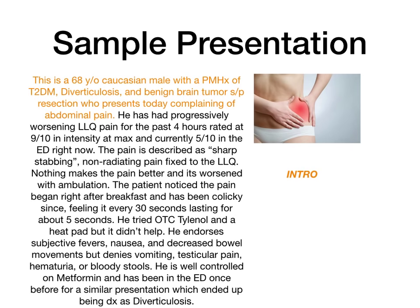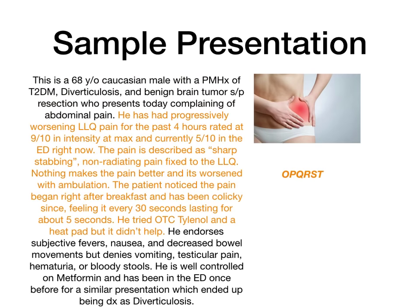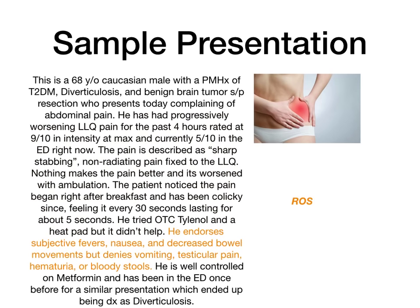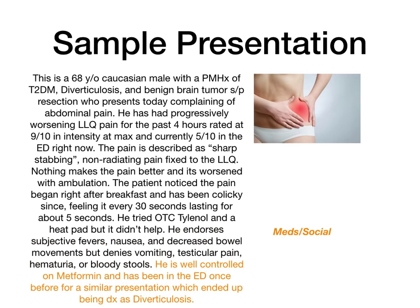He's well-controlled on metformin and has been in the ED once before for a similar presentation, which ended up being diagnosed as diverticulosis. So in the subjective, I started with the patient overview — age, race, past medical history — then jumped right into the OPQRST covering onset, provocation, quality, radiation, severity, and timing. After that, I did a pertinent review of systems covering GI and GU concerns. And lastly, a brief med-social: he's well-controlled on metformin and has been to the ED before for a similar presentation.